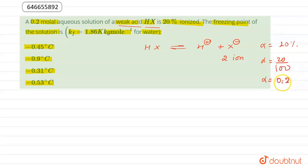That can be written as 20 divided by 100, or we get alpha is equal to 0.2. Now we can calculate van't Hoff factor for this acid. i is equal to 1 plus alpha times (n minus 1), where n is number of ions and alpha is degree of ionization.